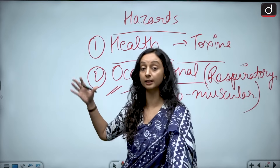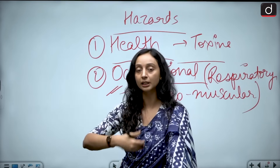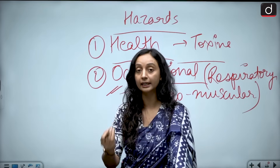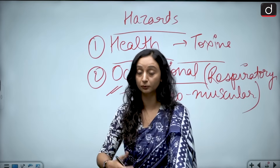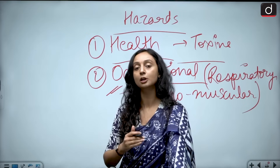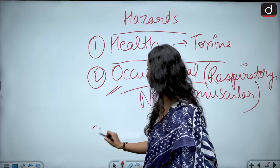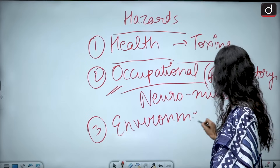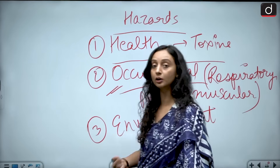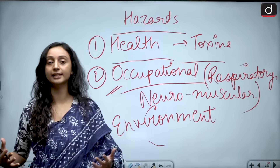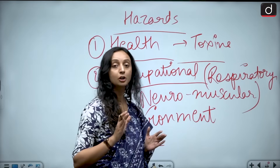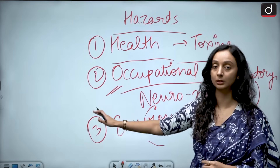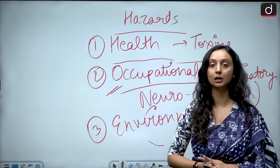Health hazards and occupational hazards are there. People who live near these dumping yards and landfills are also drinking and eating contaminated water and food grown in contaminated soil — so they are also at risk. And finally, our environment is at risk: air pollution, water pollution, soil pollution, and leaching are all happening. This will have severe consequences on the environment. So health hazards, occupational hazards, and environmental challenges are all present.